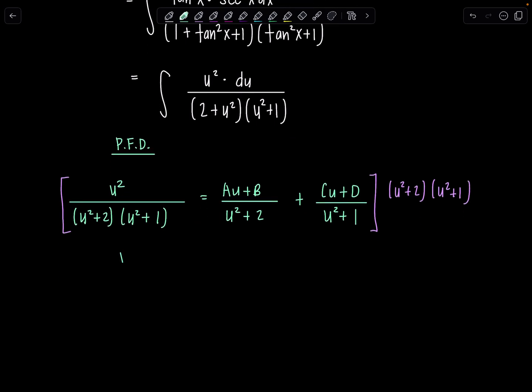So now we'll have u squared over here equals au plus b times u squared plus one, plus cu plus d times u squared plus two. And then foil everything out. So u squared equals au cubed plus au plus bu squared plus b, plus cu cubed plus 2cu plus du squared plus 2d.